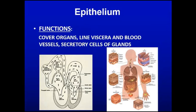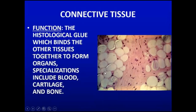Starting with epithelium — it covers organs, lines viscera and blood vessels, and it's the secretory cells of glands. So lining your circulatory system, lining the outside of your cavity, lining your digestive tract and organs — all of that is epithelium.